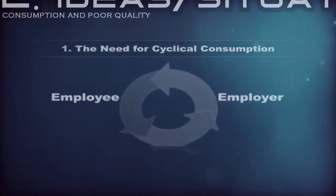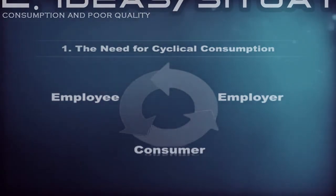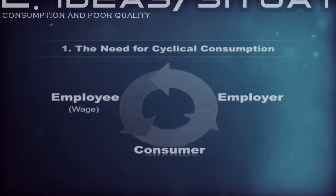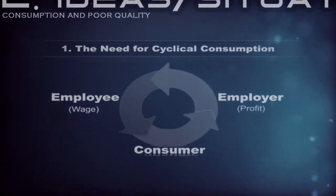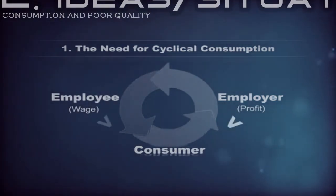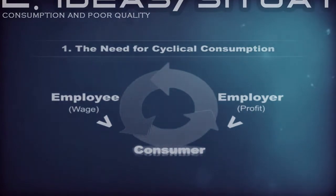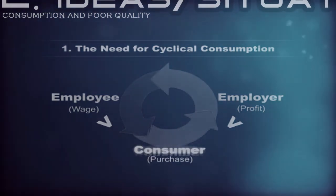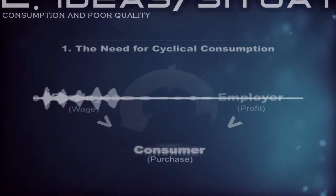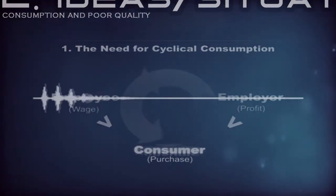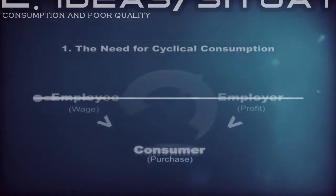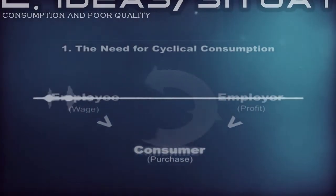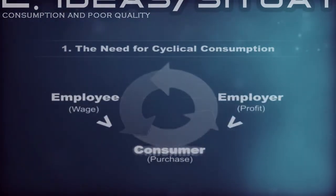The need for cyclical consumption: the roles of people in a monetary system are basically broken into three distinctions — the employee, the employer, and the consumer. The employee performs tasks for the employer in exchange for a wage, while the employer sells a good or service to the consumer for a profit. In turn, both the employer and the employee function as consumers, for the monetary payments they obtain are used to purchase goods and services relevant to their survival. This act of purchasing is what allows the entire system to perpetuate, and it is the requirement of perpetual or cyclical consumption that keeps the entire economy going. If consumption was ever to stop, the whole system would collapse.